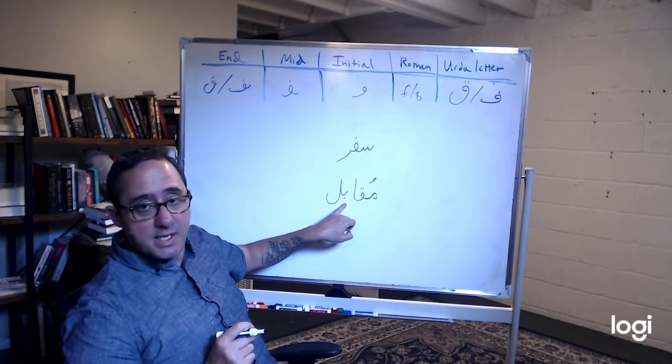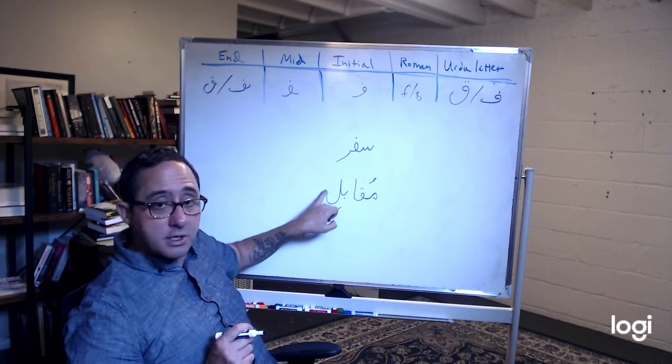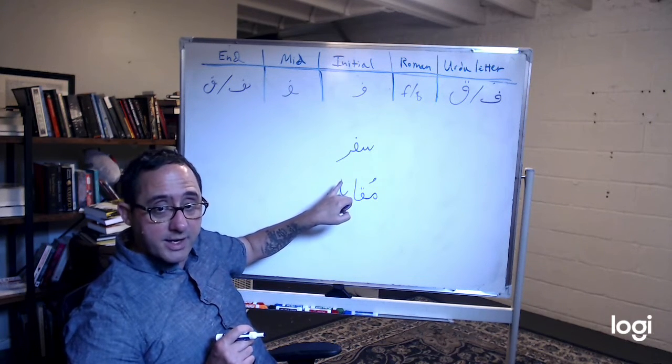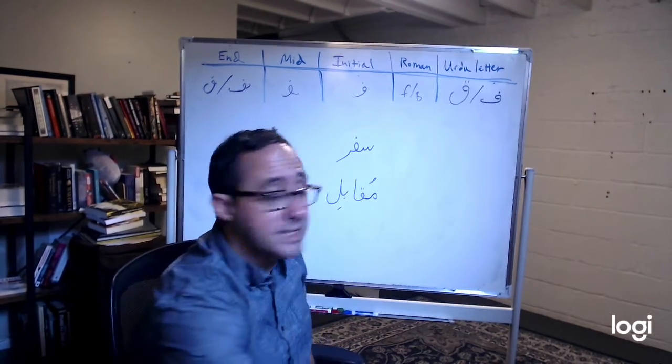Muqabil. See how the B goes into the L, and the L hook goes below that B where it enters. Muqabil means equal. That's at the midpoint. Now let's look at the end.